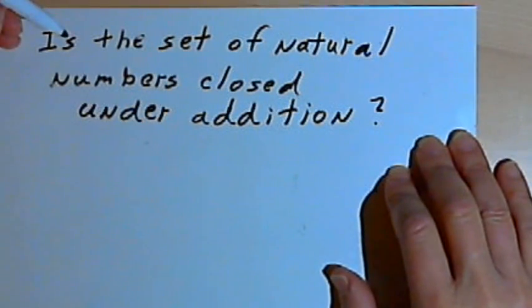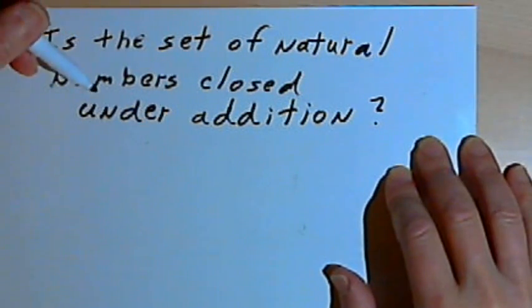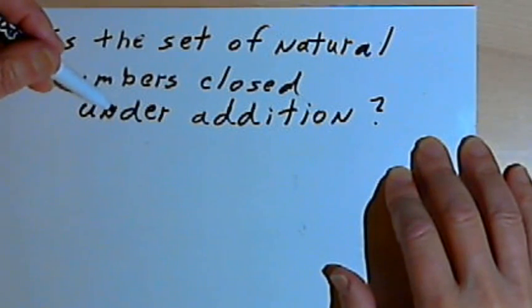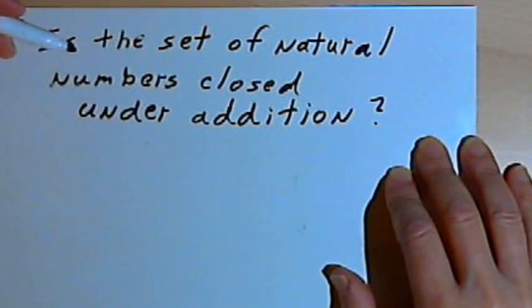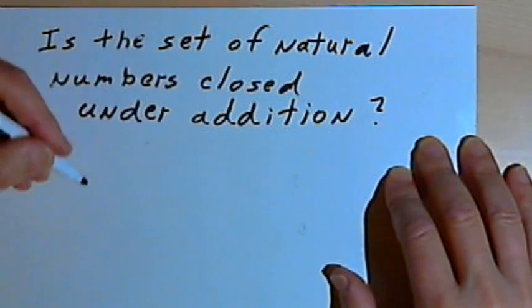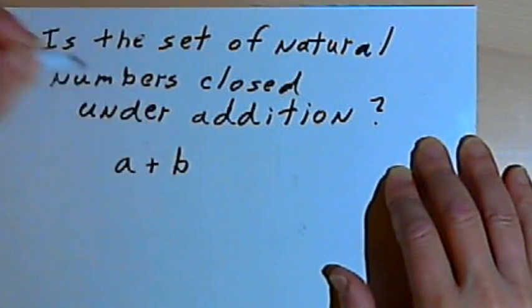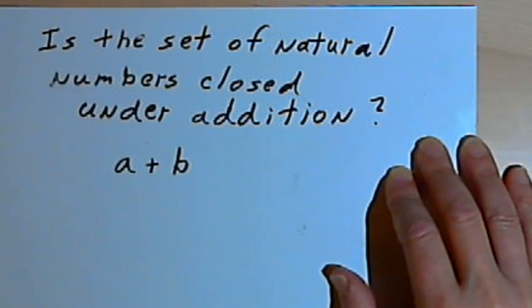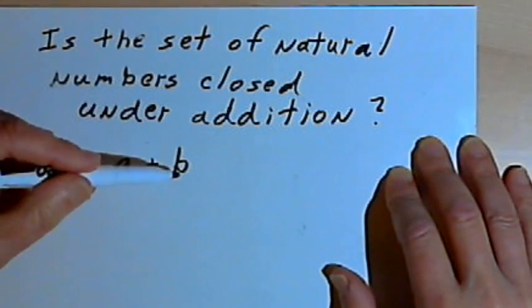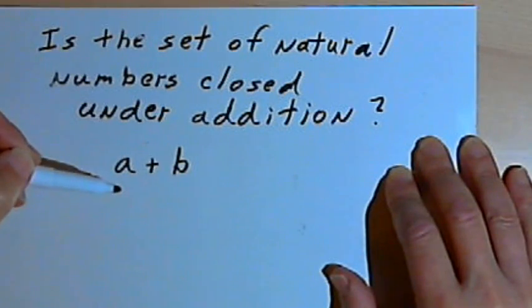So I've got this question: is the set of natural numbers closed under addition? Now all this is asking is this: If I take two natural numbers, let's call them A and B, and I add them together, so I've got A plus B, will the result of that addition also be a natural number?